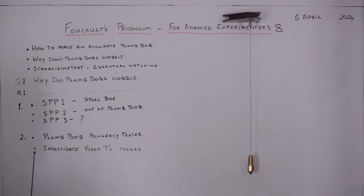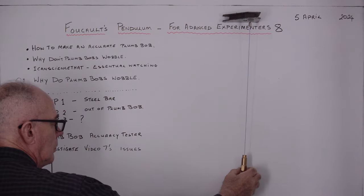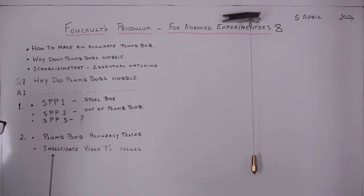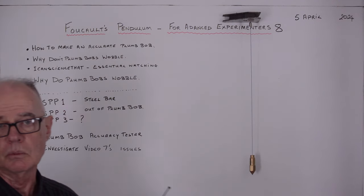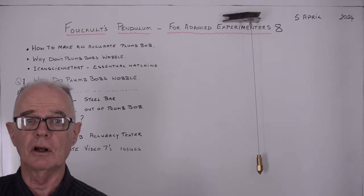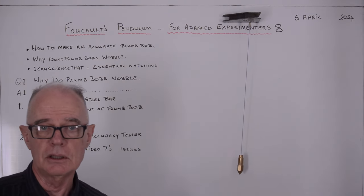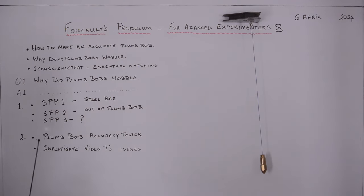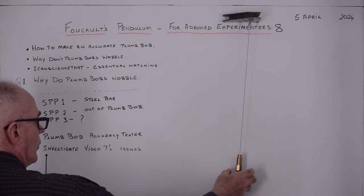Here we have a plumb bob, here we have a pendulum. The only difference is one swings and one's stationary, but in that swing the order of accuracy has to be magnified again another 10 by 10. So we have to start off with an accurate plumb bob first.